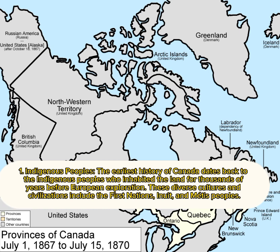Indigenous Peoples: The earliest history of Canada dates back to the Indigenous peoples who inhabited the land for thousands of years before European exploration. These diverse cultures and civilizations include the First Nations, Inuit, and Métis peoples.